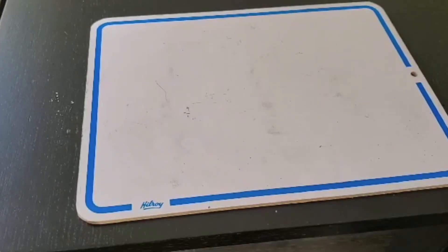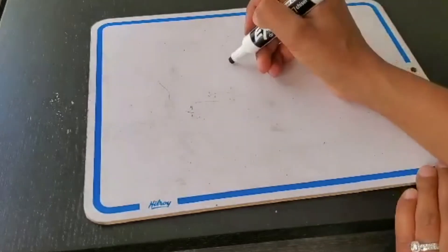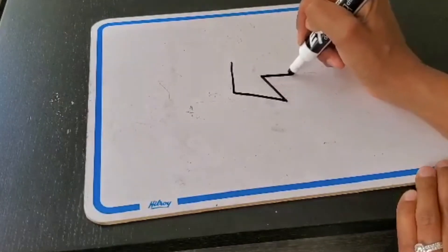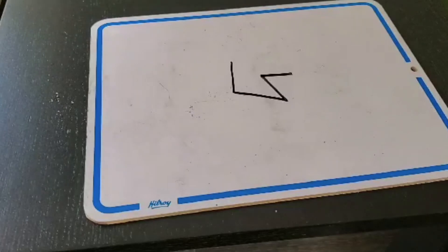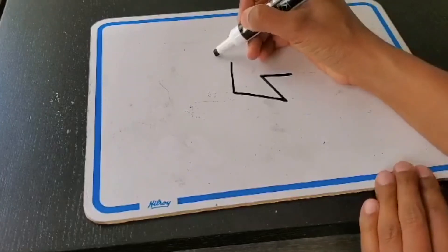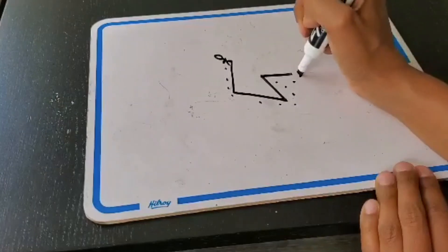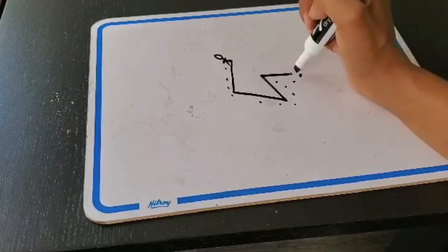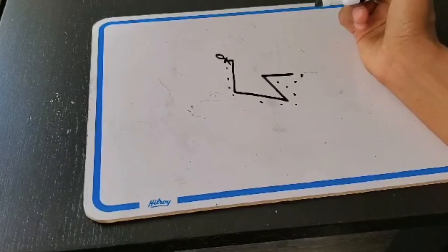Now let's do some examples of open and closed lines. I'm going to draw a shape and I want you to guess if it's an open or closed line. Is this an open or closed line? If you said open, you are absolutely correct. I know it's open because if I start over here and walk all the way around, I get stuck. The only way to get back is to turn around and walk back, so this is an open line.